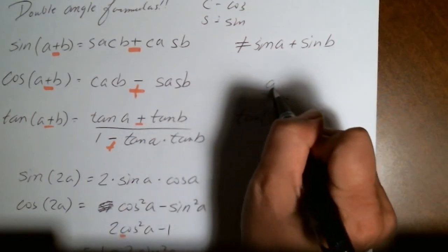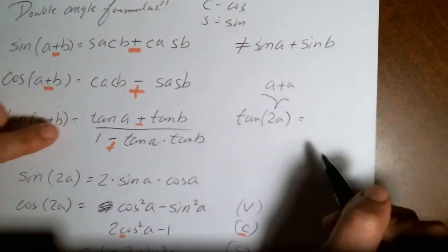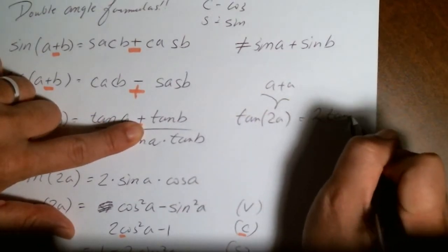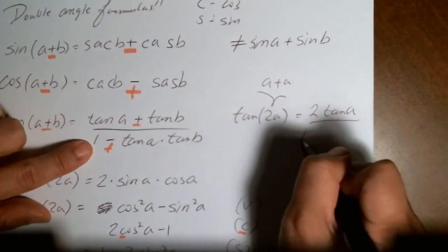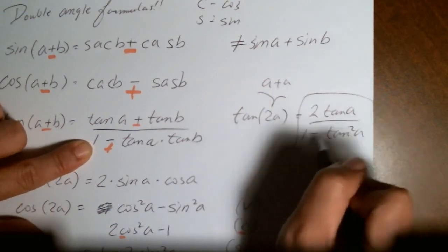So that becomes tangent of A plus tangent of A is 2 times the tangent of A, all over 1 minus tangent squared of A. And there's your double angle.